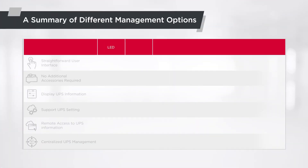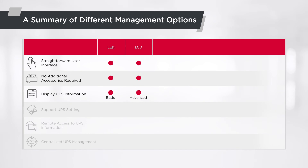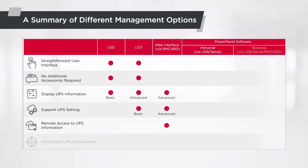For managing through LED indicators and LCD display, the operation interface is straightforward and there is no need to install additional accessories on the UPS to learn the power information. The LCD display can also allow UPS settings. Through the RM card web interface, it shows power information, supports UPS settings, and enables remote monitoring. With PowerPanel software, both Personal and Business are able to display UPS information and perform UPS settings. Additionally, PowerPanel Business also allows users to get UPS information remotely and monitor multiple devices through a single interface to achieve centralized management.